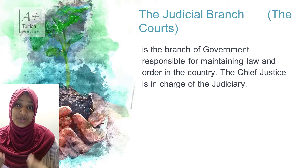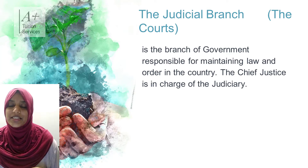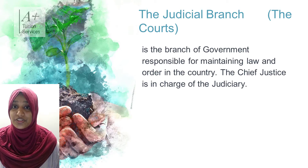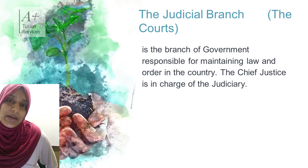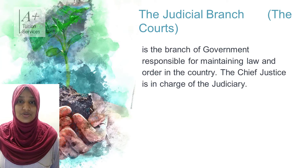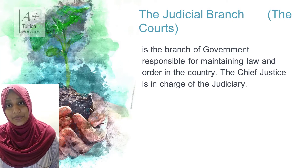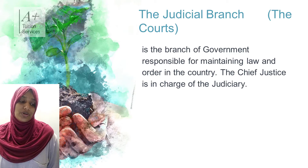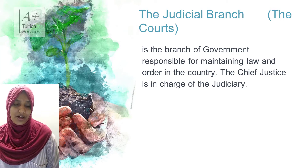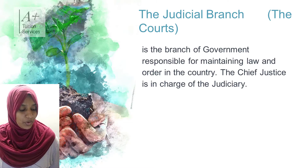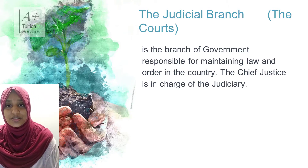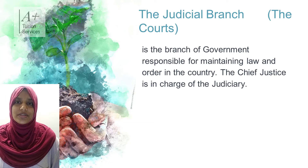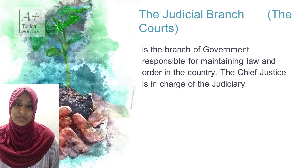Moving on to the judicial branch of the government, also called the judiciary, it consists of the courts. This branch is there to maintain the law and order of the country, and the chief justice is in charge of the judiciary. For example, if a law states no congregation is allowed in public and you are caught, the judiciary is responsible for determining punishment. The police work hand in hand with the judiciary - if police catch someone doing illegal activities, they arrest them, and then the judicial branch comes into play to determine the punishment.